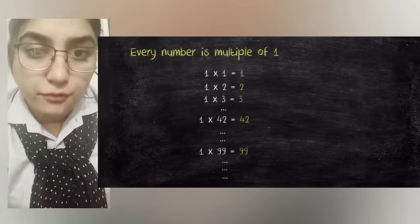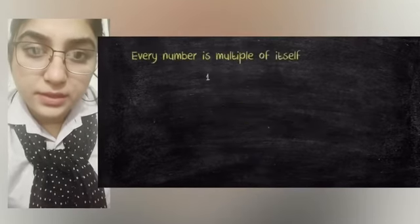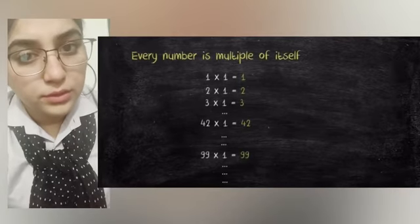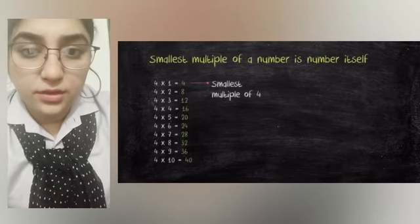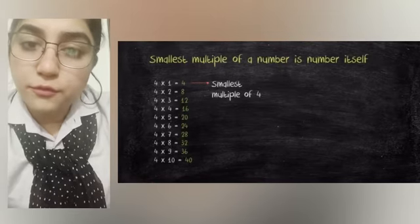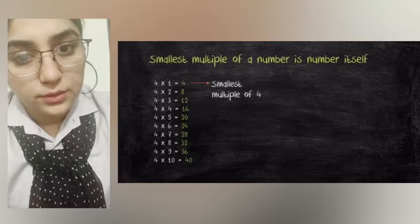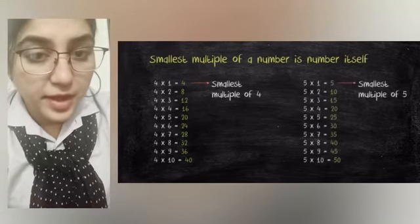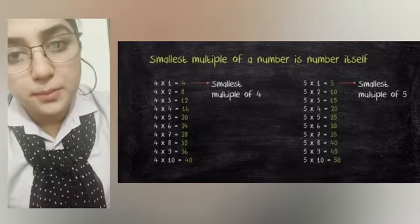The second property of multiples is every number is a multiple of itself. The third property is the smallest multiple of a number is the number itself. For example, the smallest multiple of four is four, and the smallest multiple of five is five.